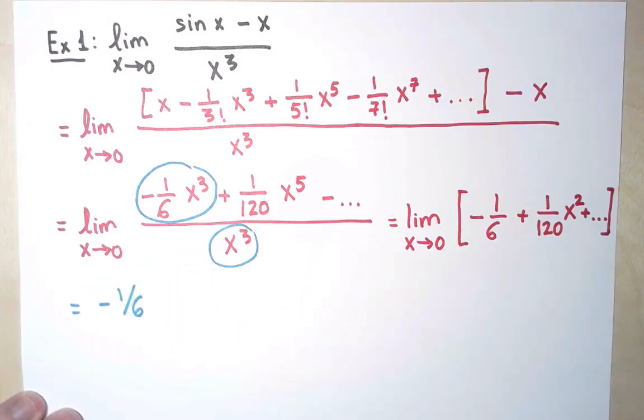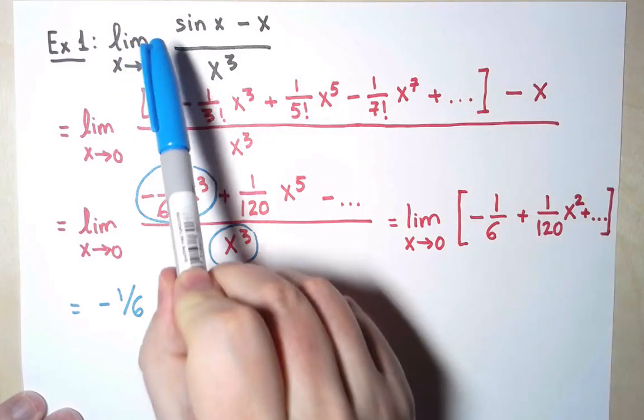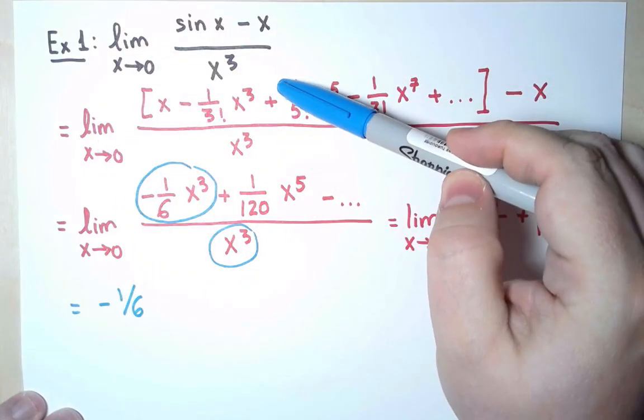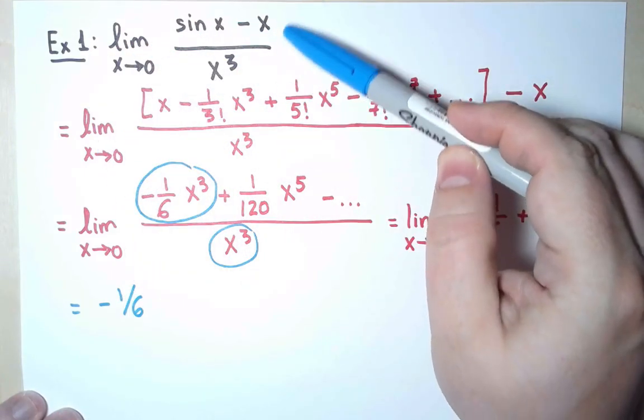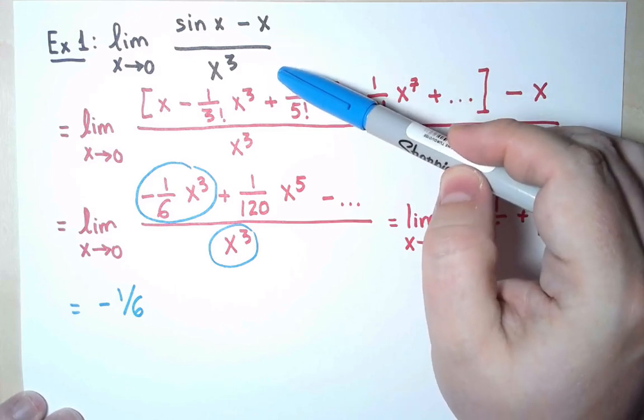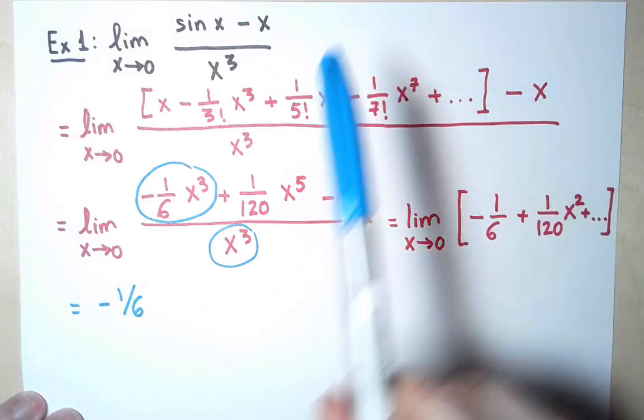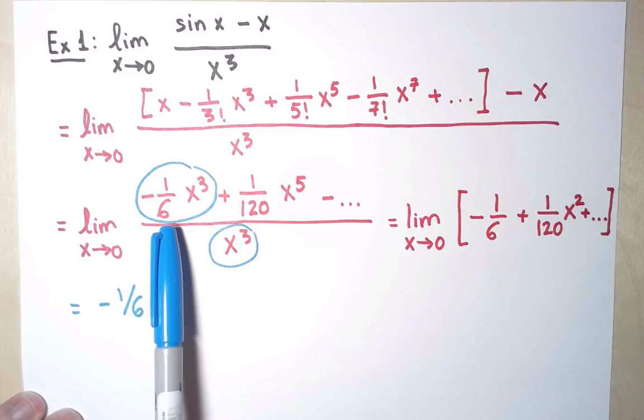This is going to be my general strategy. If I have a limit as x approaches 0 of a quotient, and both functions can be written as power series, then I'm going to do that. But I actually don't need the full power series. I just need to find the first term that is non-zero, the one with the smallest exponent, and that's all that will matter to compute the limit.